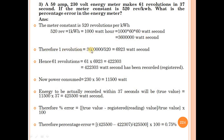Therefore, 1 revolution = 3,600,000 / 520 = 6923 watt seconds. For 61 revolutions: 61 × 6923 = 422,303 watt seconds has been recorded and registered by the energy meter.